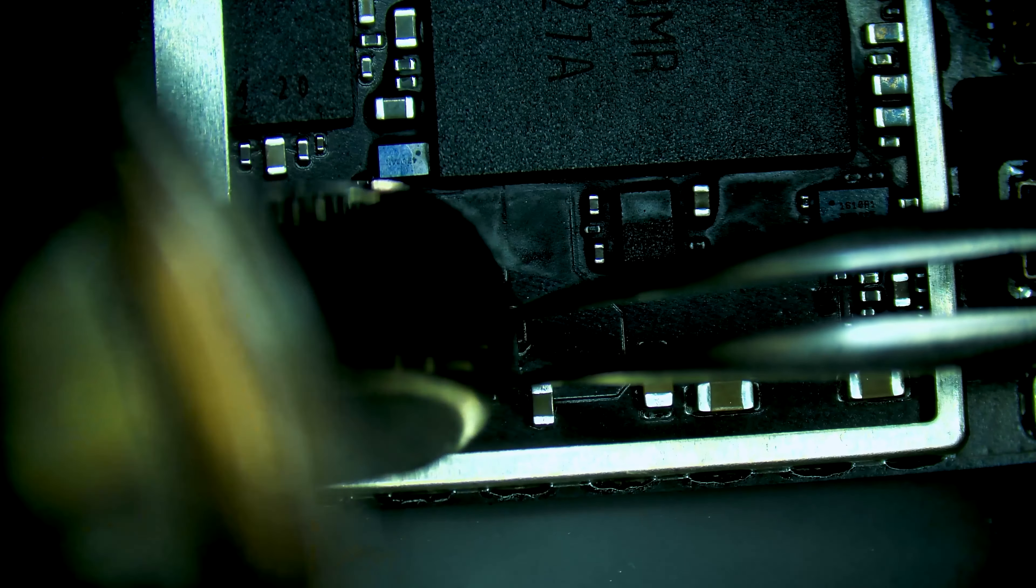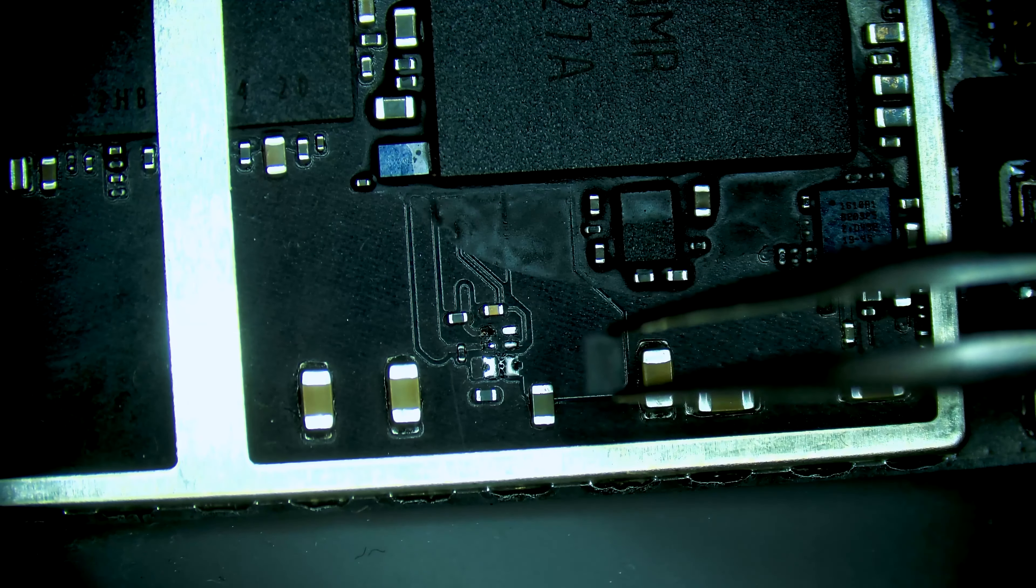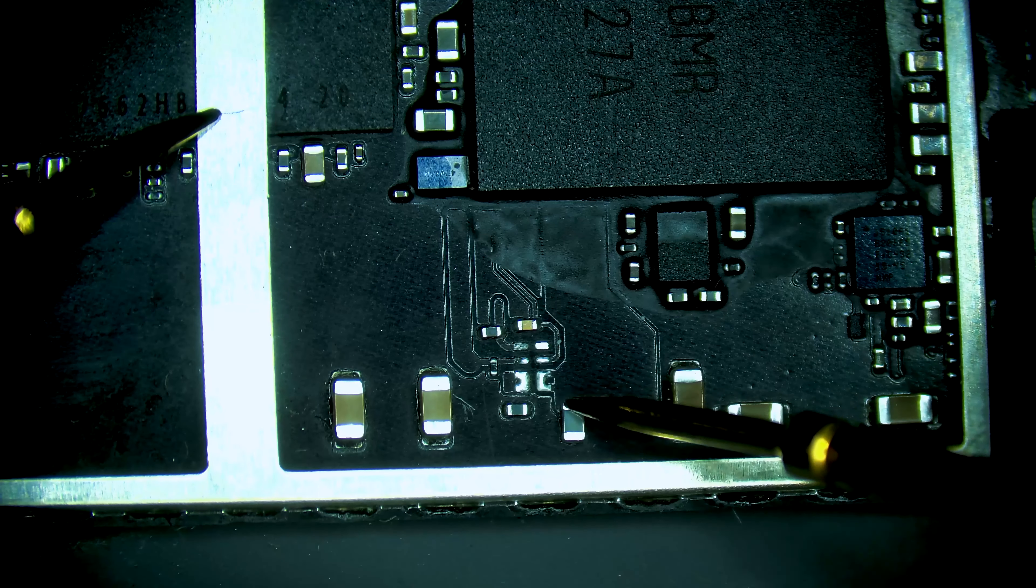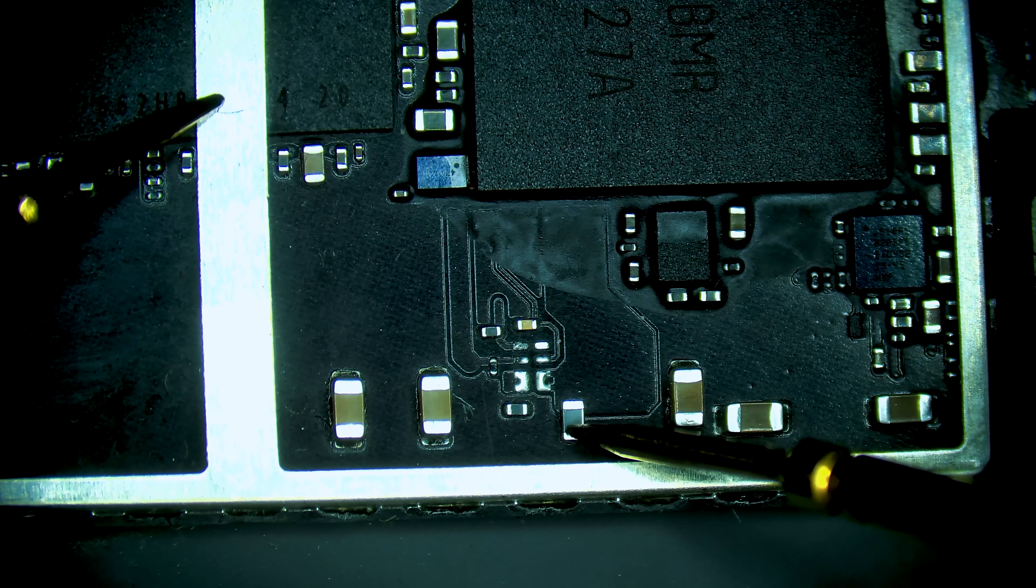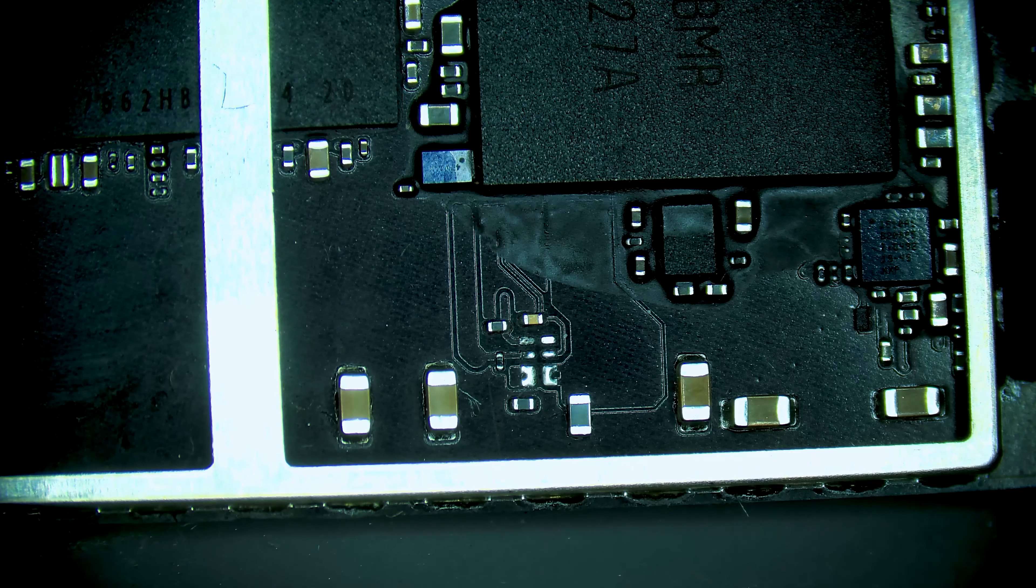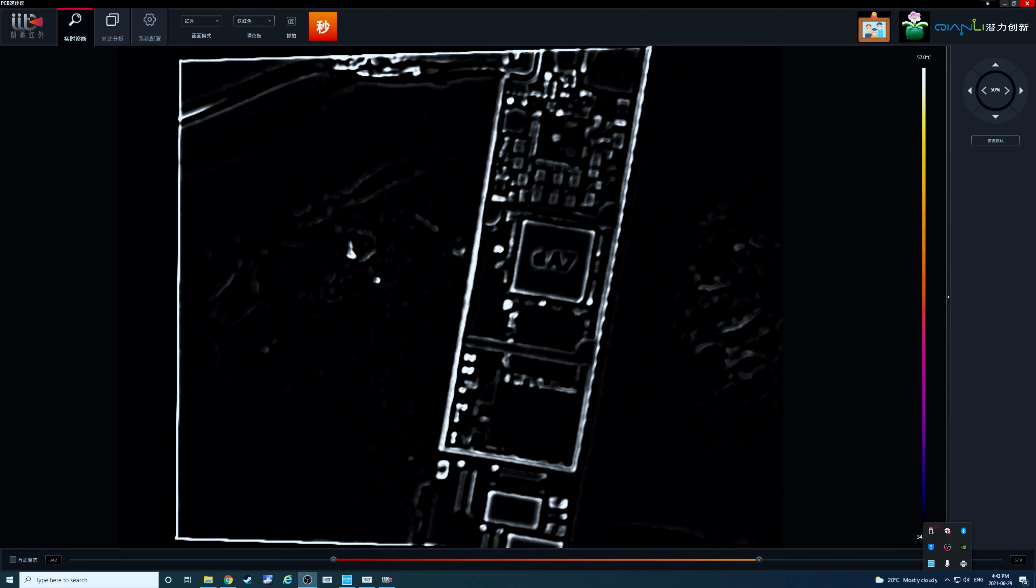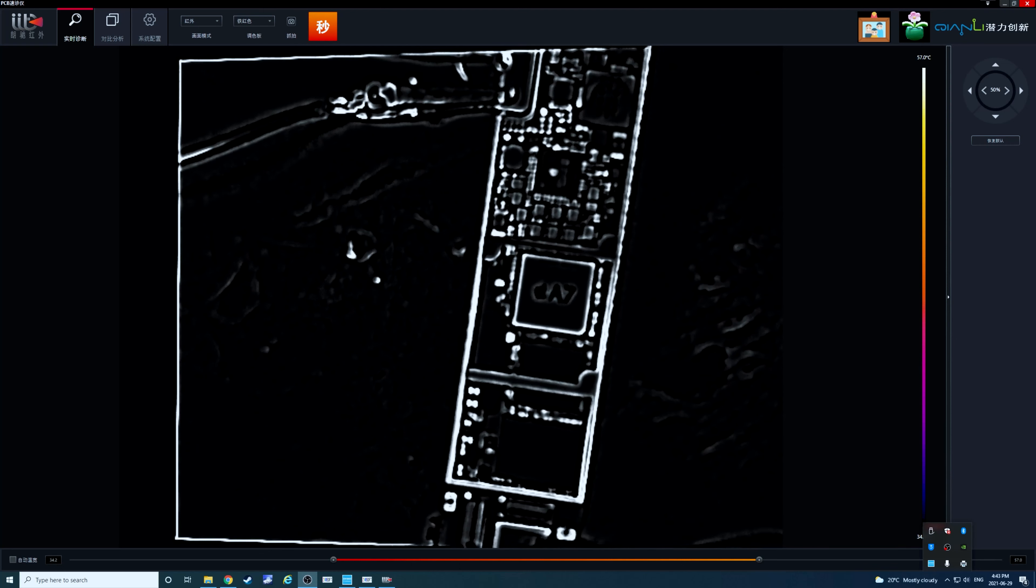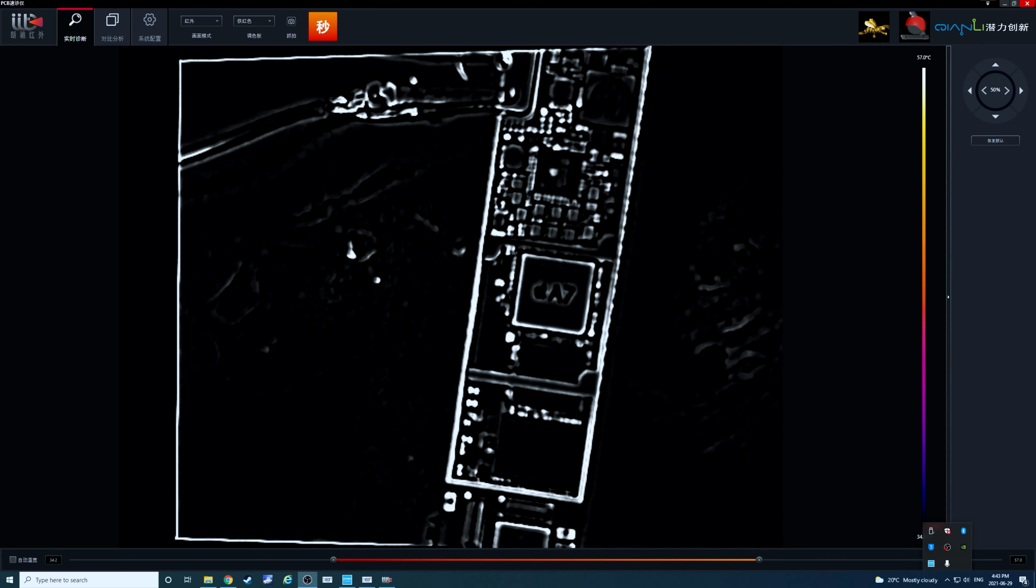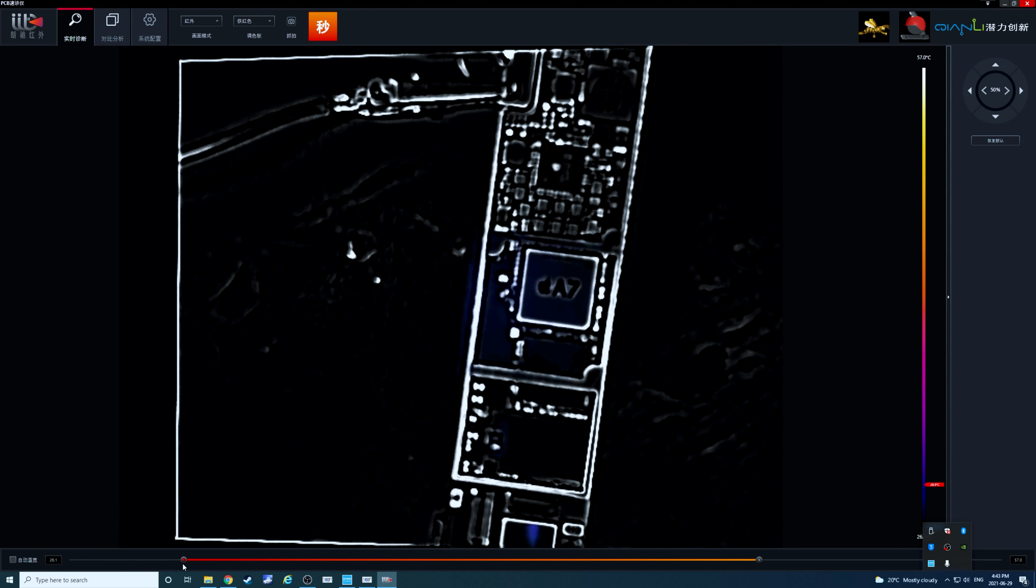So as expected, the short still exists, but now that this chip is removed we may be able to more easily identify where the short is. Alright so I've enabled DC power supply. So now we're drawing much less, 70 milliamps. It's still a short. Let's see if we can see it on the thermal view here.